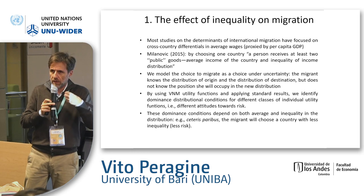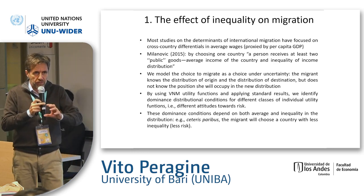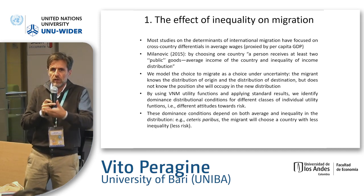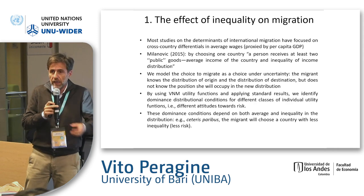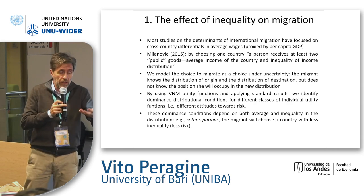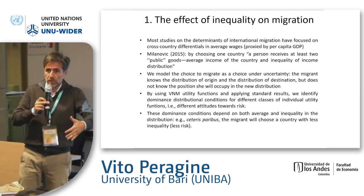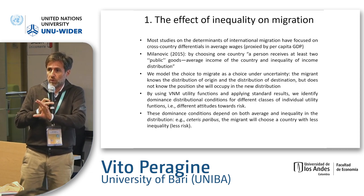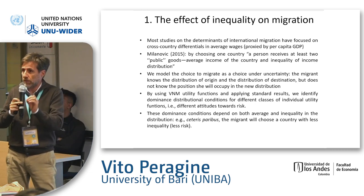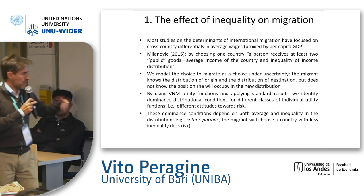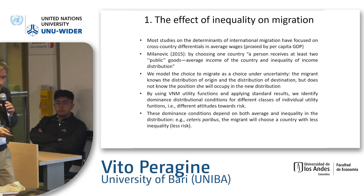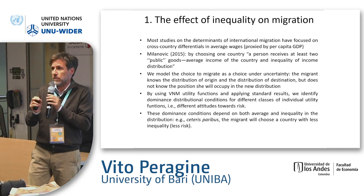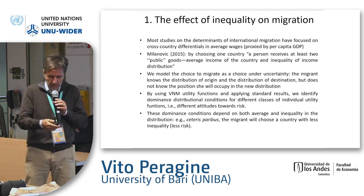Imagining, as in Rawls' original position, that individuals know the distributions but do not know their positions in the distribution. Or, as a legitimate alternative hypothesis, individuals can make some assumption about where they will locate in the country they arrive. In any case, the distribution of the country they go to is relevant for their choices. Either if you model it as a choice under uncertainty — where there is an isomorphism between risk and inequality — or explicitly because you know you are going to locate probably in the lower tail of the distribution.